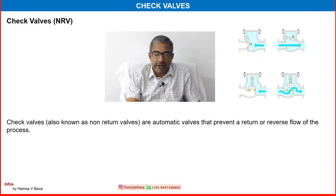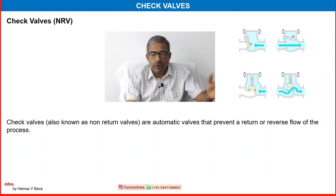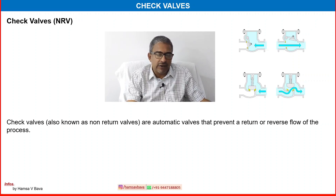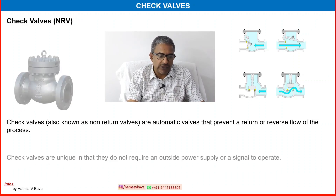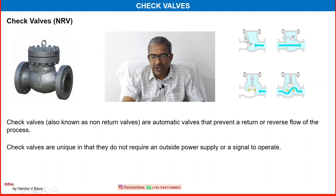Check valves are known as non-retained valves or automatic valves that prevent a retain or reverse flow of the process. So it is a non-retained valve, providing one directional flow only. You can see here: only one side it will open. This is the check valve closing and opening element — it will open and allow flow in one direction, and when flow comes opposite it will close.